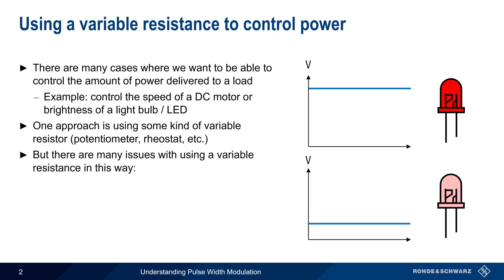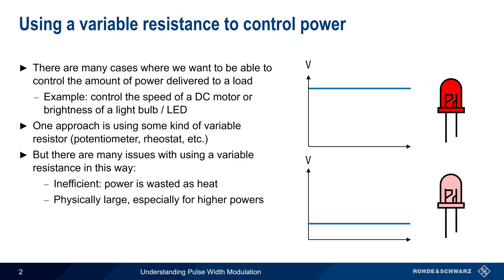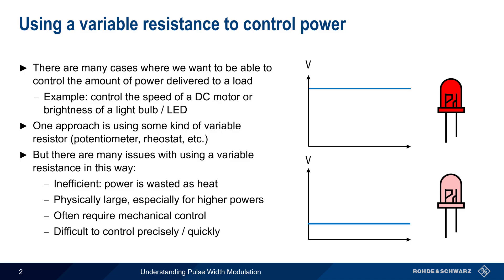First, and perhaps most importantly, this is inefficient, since it dissipates or wastes power in the form of heat, and this heat can in turn create other issues. Because they must dissipate power, often for long periods of time, variable resistances tend to be physically large. In addition, mechanical control is typically required for many variable resistances, making it difficult to quickly or precisely control the voltage or power.